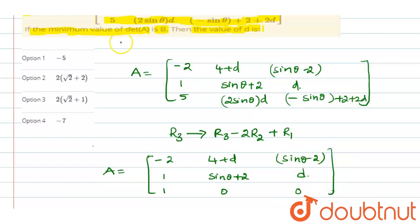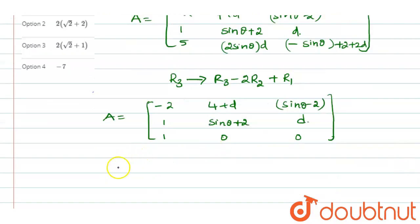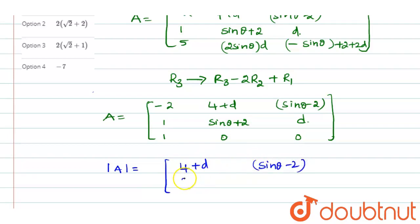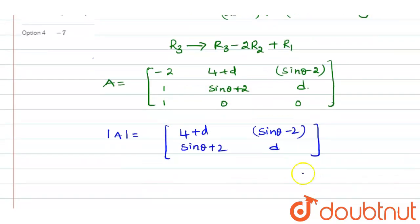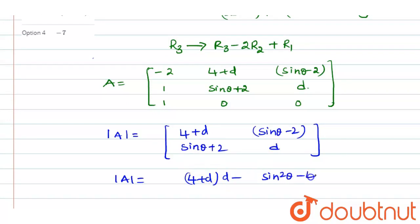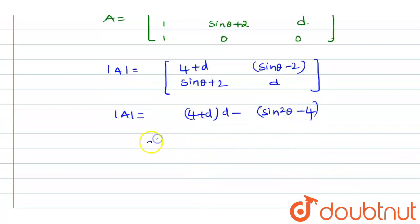So the determinant |A| expands to a 2×2 determinant with entries 4 plus D, sine θ minus 2, sine θ plus 2, D. Expanding: |A| equals (4 plus D) times D minus (sine squared θ minus 4), which gives 4D plus D squared minus sine squared θ plus 4.